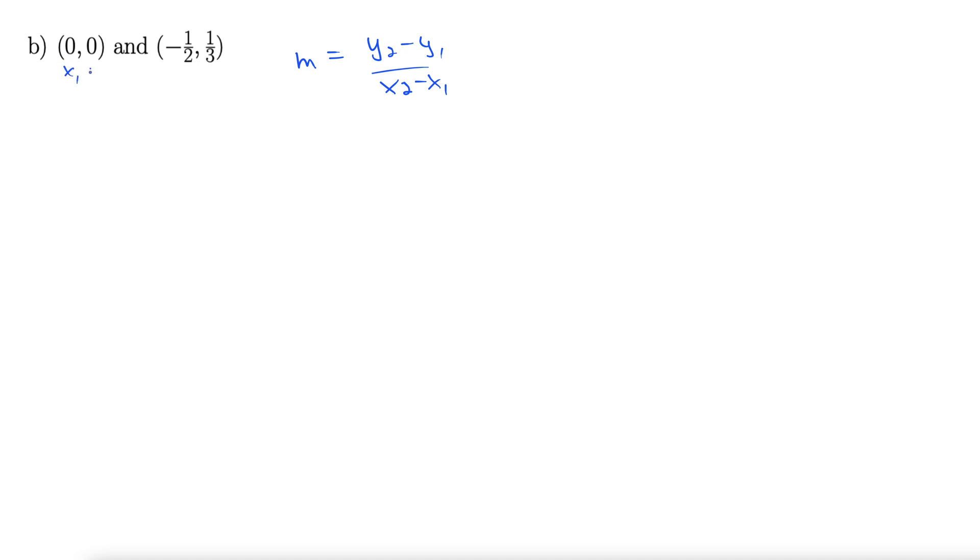Let's call this x1, y1, and x2, y2. So 1/3 minus 0 over negative 1/2 minus 0.